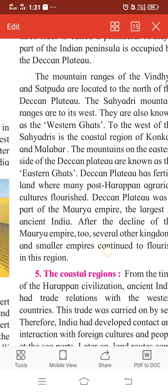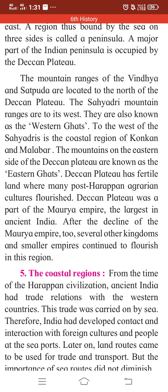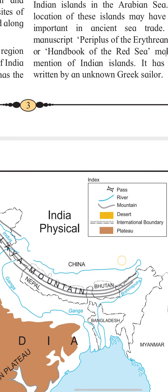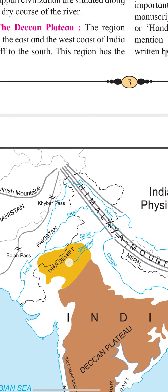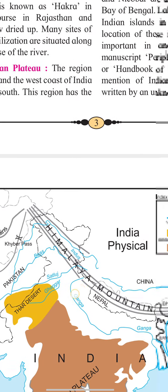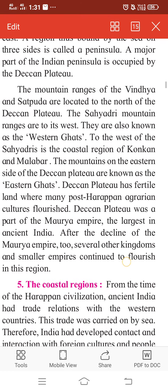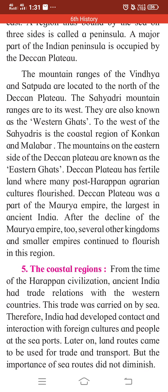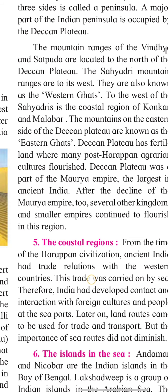The Sahyadri mountain ranges and the Satpura ranges are located in the north of the Deccan Plateau. The Vindhya and Satpura ranges are located to the north, and the Sahyadri mountains are to the west of the Deccan Plateau.